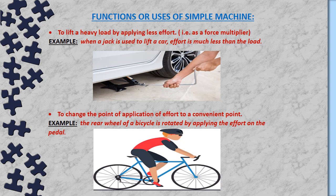The second function is to change the point of application of effort to a convenient point. For example, the rear wheel of a bicycle is rotated by applying effort on the pedal. Just imagine a bicycle without a pedal — a person would have to apply force directly on the rear wheel, which is very difficult. So the machine, i.e. the pedal, helps us change the point of application of force to a convenient one.